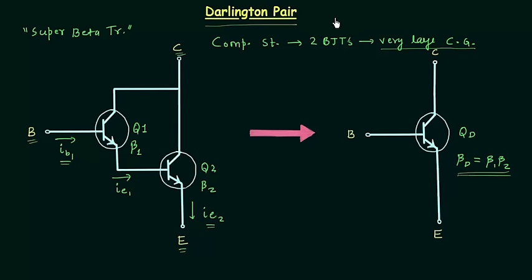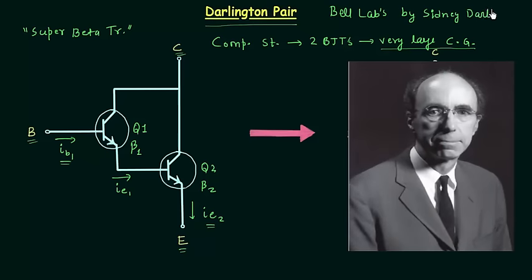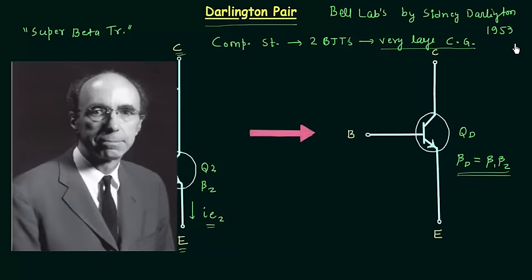The Darlington pair was invented at Bell Labs by Sydney Darlington in 1953.